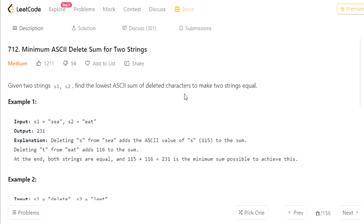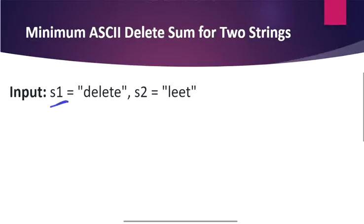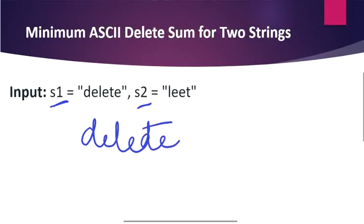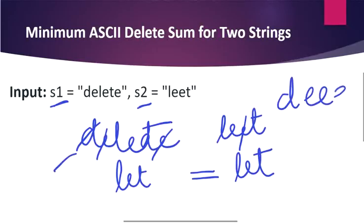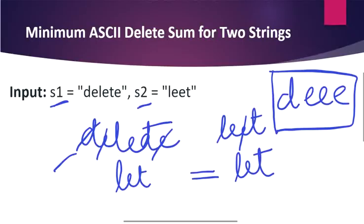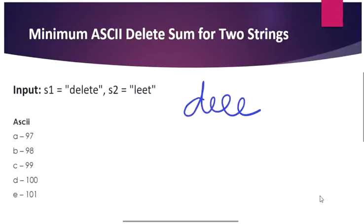Let's understand this problem statement with an example. Here S1 is 'delete' and S2 is 'leet'. We need to check what characters to delete from both words to make them equal. From S1 we delete D and two E's to get 'let', and from S2 we delete one E to get 'let'. So we deleted four characters total: D, E, E from word 1 and E from word 2, making both strings equal.